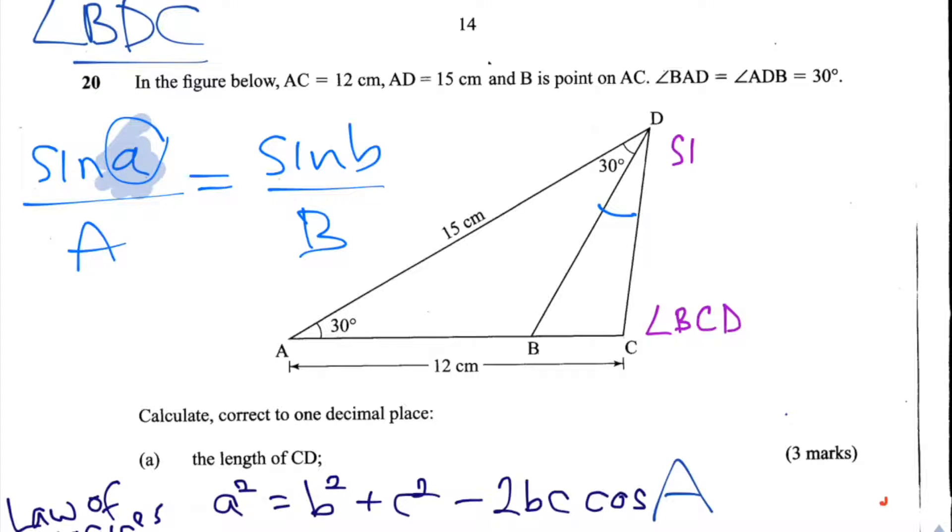So what we're going to do first is multiply by this length A on both sides, so we get sine A is equal to A sine B over B.